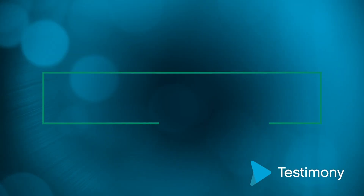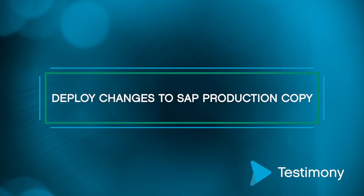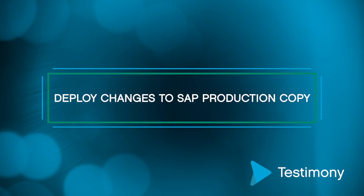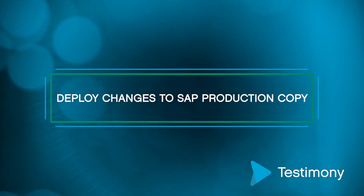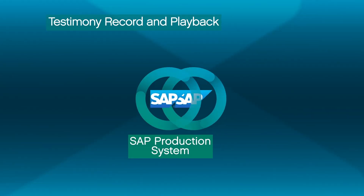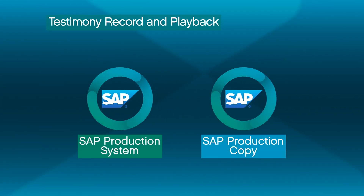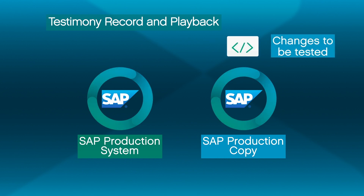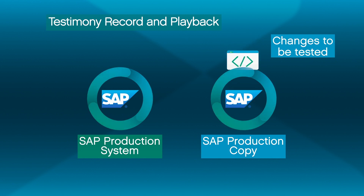After the recording, create an isolated test system from a correlated copy of production. This is a separate entity, not connected to the rest of the organization. Apply the changes to the test environment. This could be a new support pack or a set of transports containing new features or bug fixes.